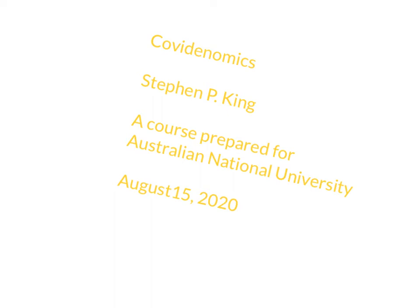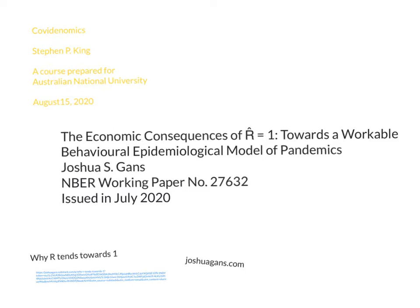Welcome back to the second video in the sixth lecture on Covidonomics. Last lecture we saw this tendency worldwide for the effective reproduction number for Covid-19 to go to one. In this video and in the next video, we're going to try and explain that and the implications of it.